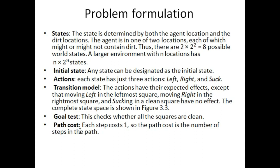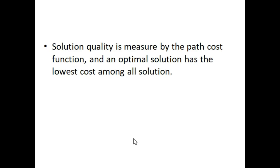The path cost: each step cost is one, so the path cost is the number of steps in the path. The solution quality is measured by the path cost function. An optimal solution has the lowest cost among all solutions. If there are multiple possible paths from the initial state to the goal, the solution that gives the path with the lowest cost is the optimal solution.